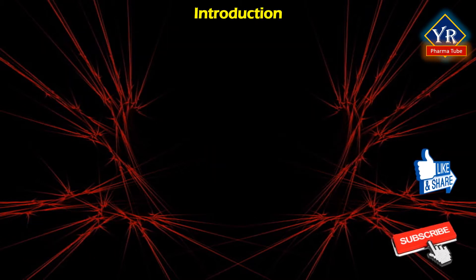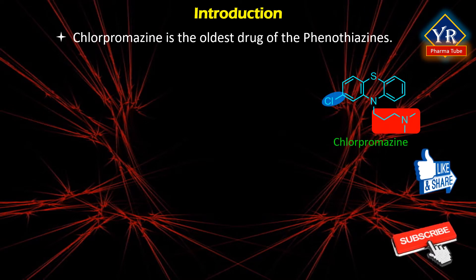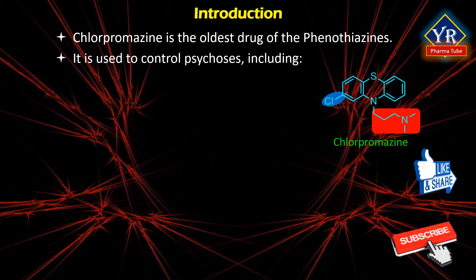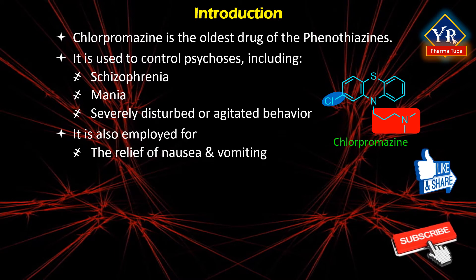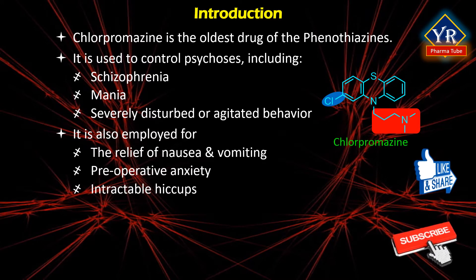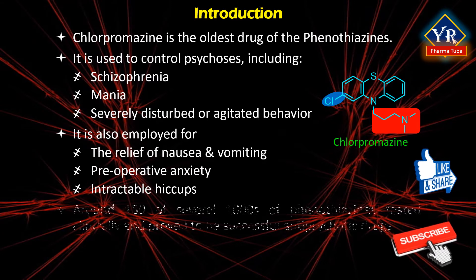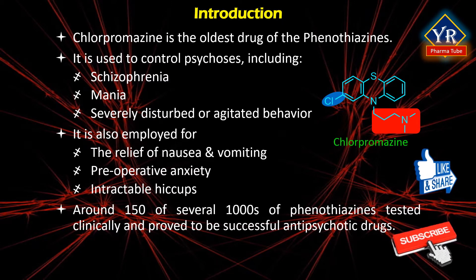Introduction to phenothiazines. Chlorpromazine is the oldest representative of this class of drugs. It is used for the control of various psychoses including schizophrenia and mania, and severely disturbed or agitated behavior. It is also employed for the relief of nausea and vomiting, pre-operative anxiety, and intractable hiccups. Since the introduction of chlorpromazine, several thousands of new phenothiazines and related tricyclic analogues have been synthesized and tested.